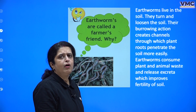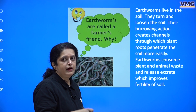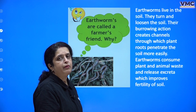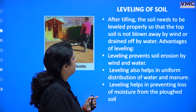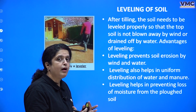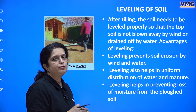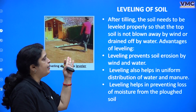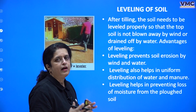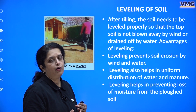Why are earthworms important? Why are they called the farmer's friend? Earthworms penetrate the soil, make it more aerated, and their excreta adds to the nutrient content of the soil. For leveling: once plowing is done, there may be bigger crumbs in the soil that need to be crushed, and then the soil is leveled with a simple wooden device, so water does not collect in one place during irrigation and sowing.